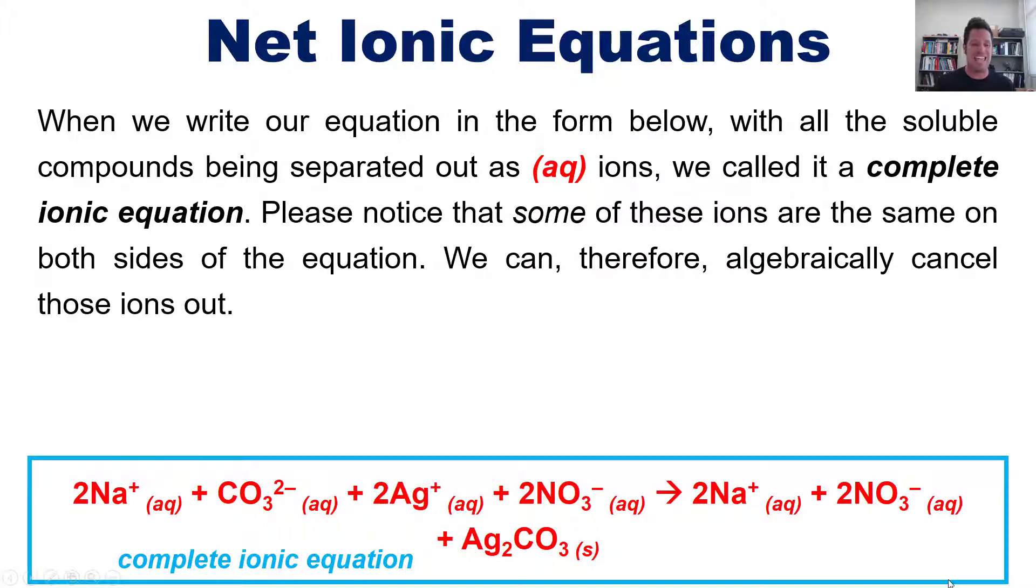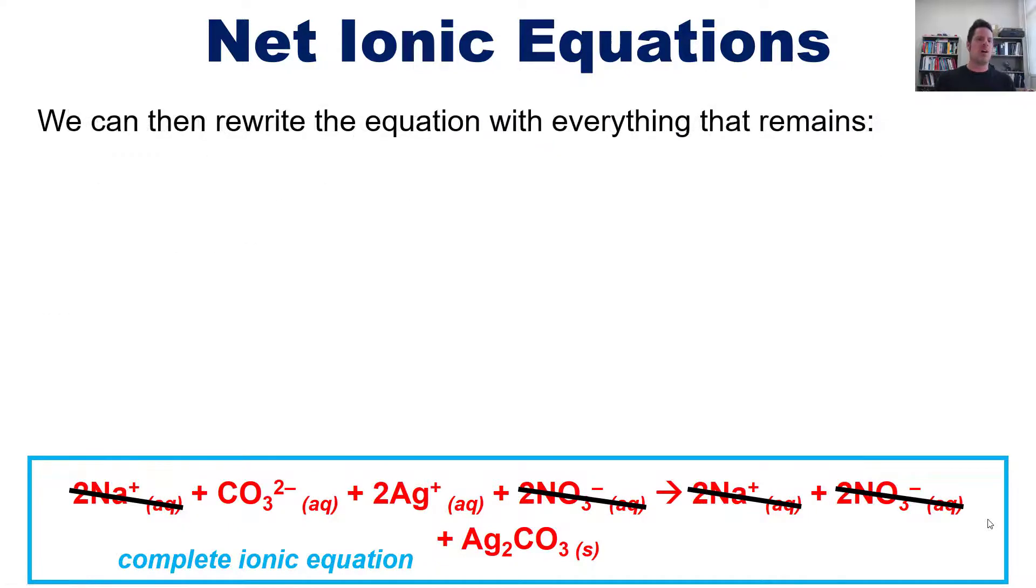So, we can actually algebraically cancel those out. Similarly, there's two nitrates over here on the left, and there are two nitrates on the right side of the equation. We can cancel those two out. Isn't that great? Algebra is wonderful. All right.